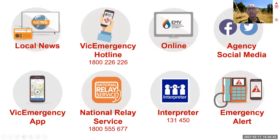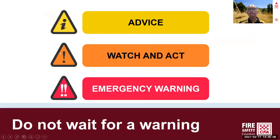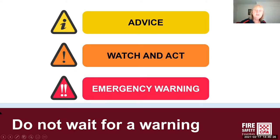Local ABC news is one of the best ways to keep in touch with what's going on in your locality on a bad fire day. The CFA would suggest you have a battery-operated radio as part of your emergency kit. We're now going to give you a sense of the warning system used through the Vic Emergency app when it comes to a pending fire situation.